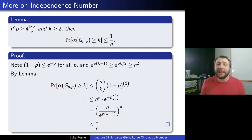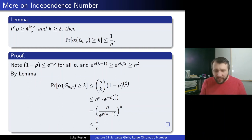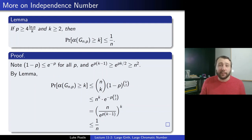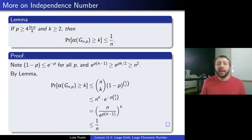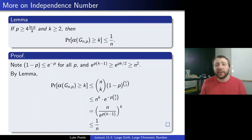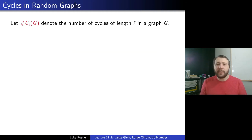So this is saying: if p is roughly log n over k, then the probability that α is at least k is quite small — at most 1/n. You're rather unlikely to have independent sets of size around 4 log n / p. For example, if p = 1/2, you'd want independent sets of more than about 8 log n, which is what we used for Ramsey numbers last time. Here we'll need it more generally since p will be a function of n rather than a constant.